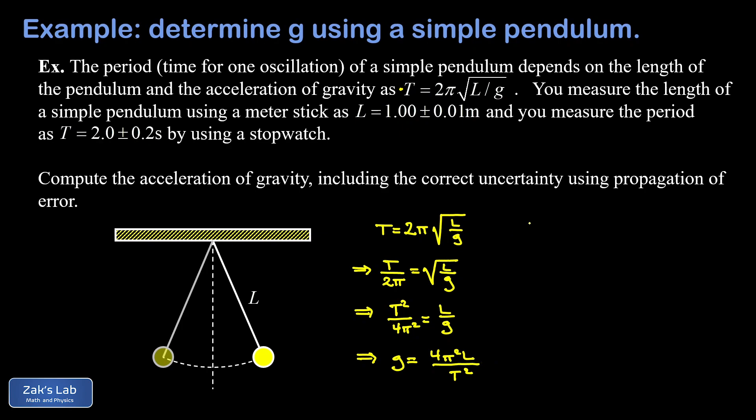Now we can actually calculate g and we just sub in the measured length of the pendulum, which was 1.00, and the period of oscillation, which was 2.0. Don't forget to square that. And we arrive at an approximate value of 9.8696, just keeping some extra precision for the moment. Of course, that's measured in meters per second squared.